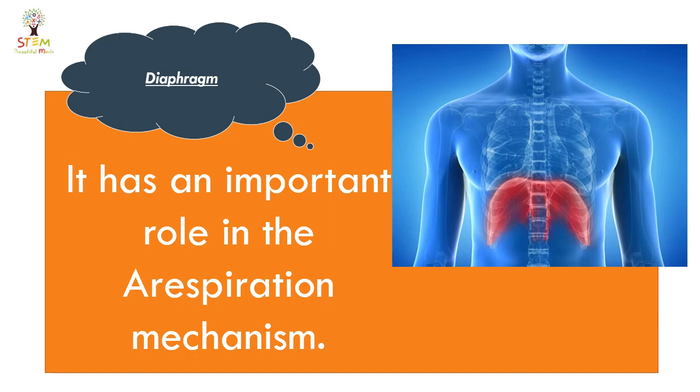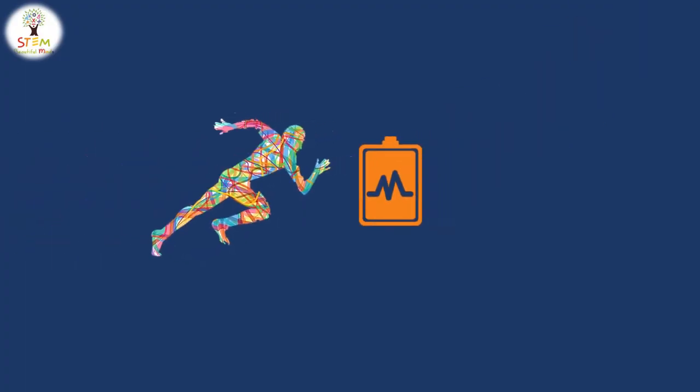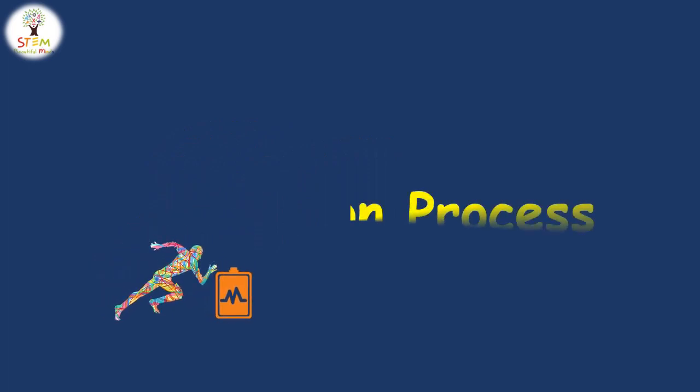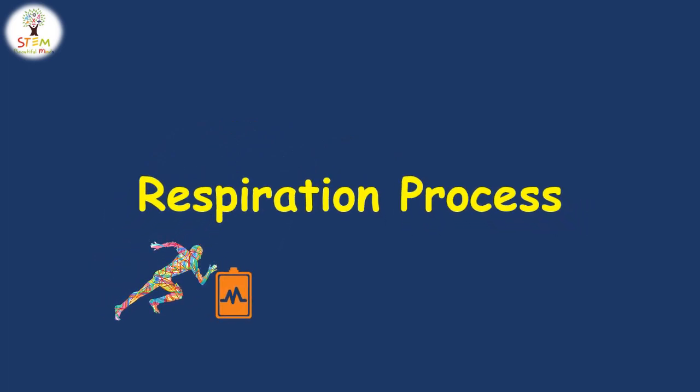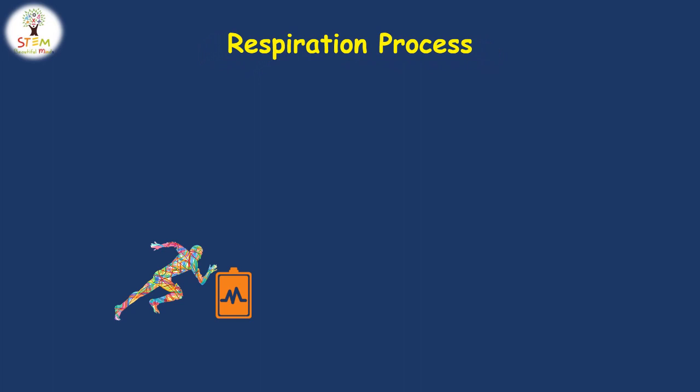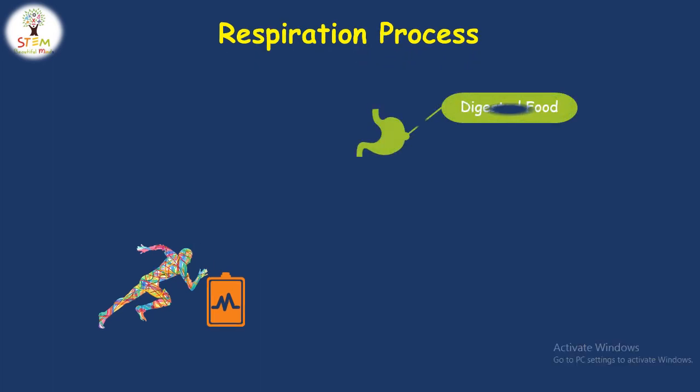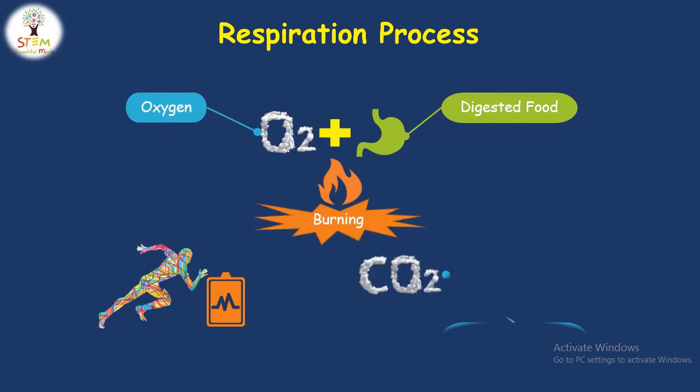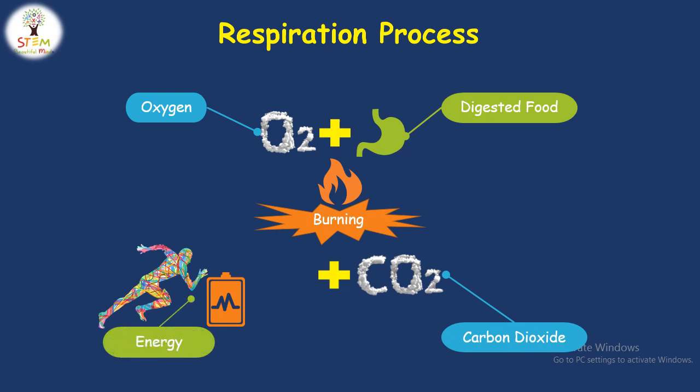We know today that your body needs energy. You get this energy by the respiration process. The respiration process is burning digested food with oxygen to get energy and carbon dioxide. Can you mention the respiratory system organs?